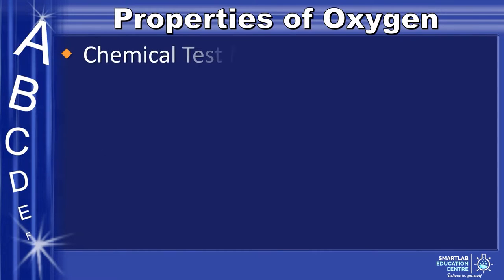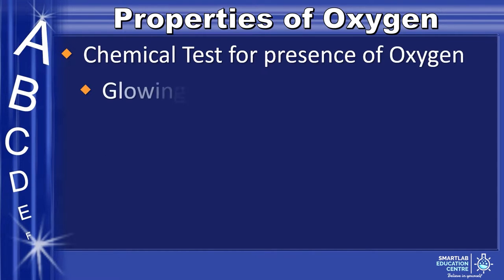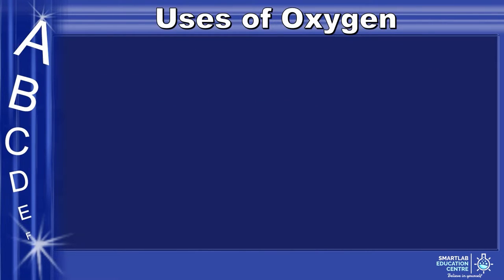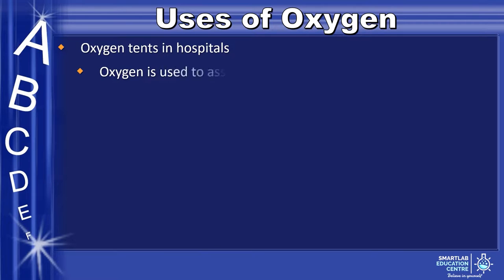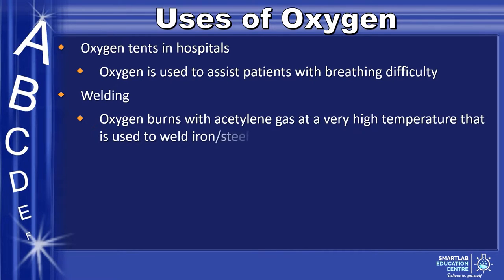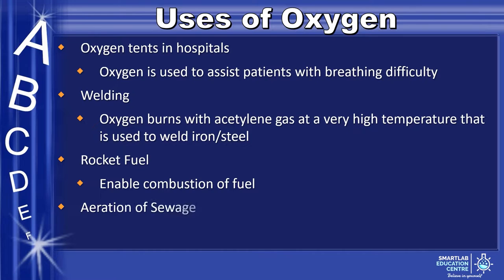A chemical test for the presence of oxygen is when a glowing splint would be relit. Oxygen has several uses: the first being oxygen tents in hospitals, where it is used to assist patients with breathing difficulty. It is also used for welding where oxygen burns with acetylene gas at a very high temperature used to weld iron or steel. It is used for rocket fuel where it enables the combustion of fuel. Lastly, it is used in the aeration of sewage, and it kills harmful bacteria in the treatment plant.